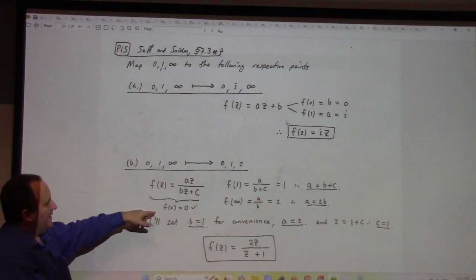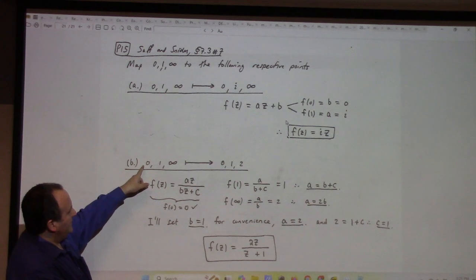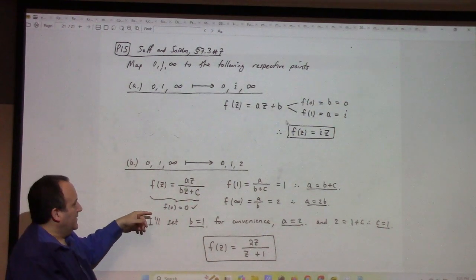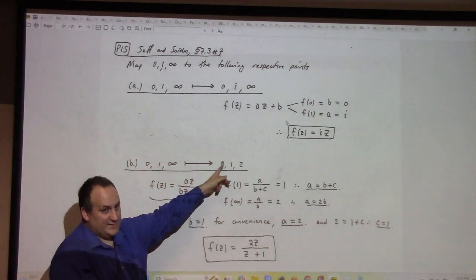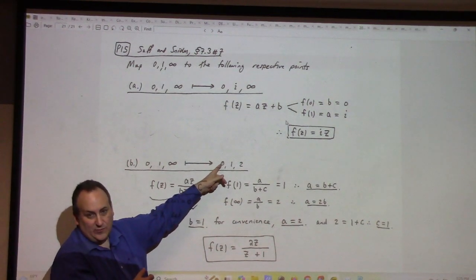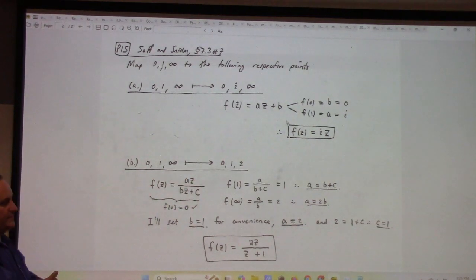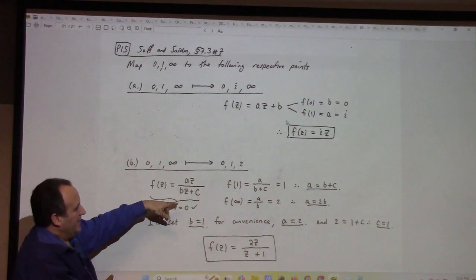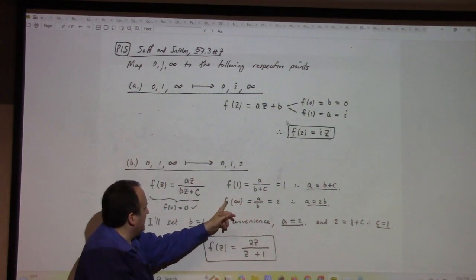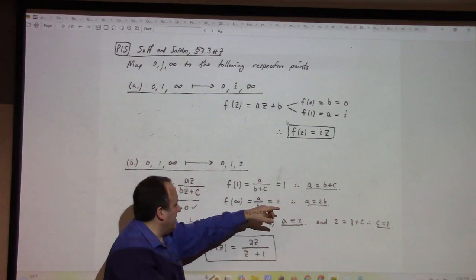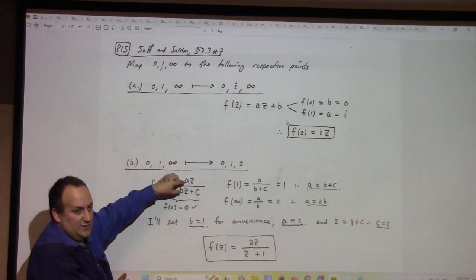This one, I've got 0 going to 0. That means there has to be a plain z in the numerator. That's the only way you can get 0 mapping to 0. If I had 3 mapping to 0, that would put a z minus 3 in the numerator. If I had 7i mapping to 0, I would put a z minus 7i in the numerator. So essentially the factor theorem, but for fractions. And so I have that. It's my pattern. But I know f of 1 is 1. I know f of infinity. So infinity is always the ratio of the leading coefficients. That's how I do that.